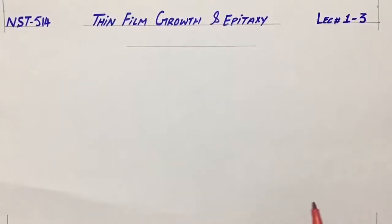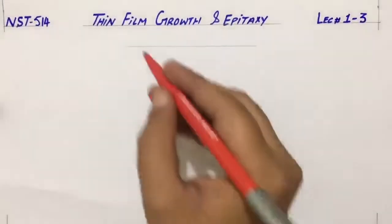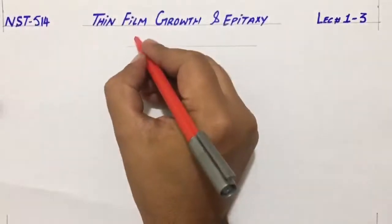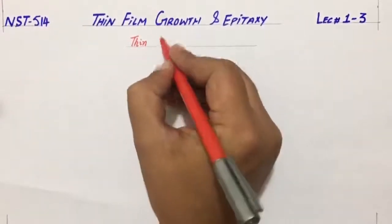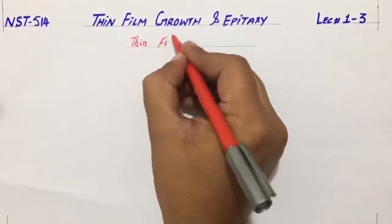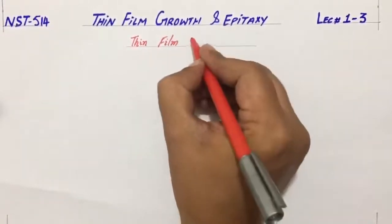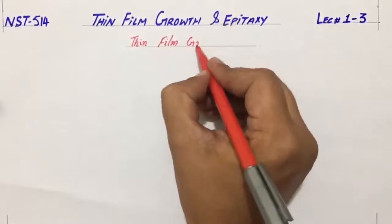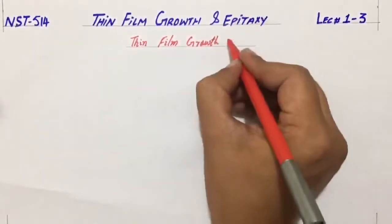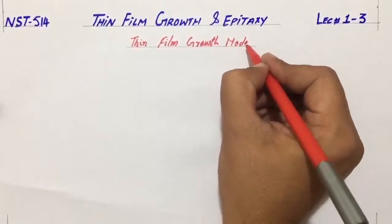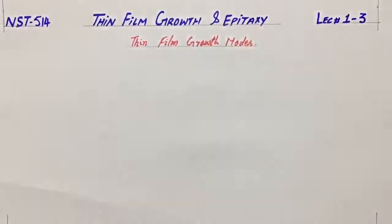Now we discuss thin film growth modes. There are three main modes of thin film growth in which the film grows in different ways.